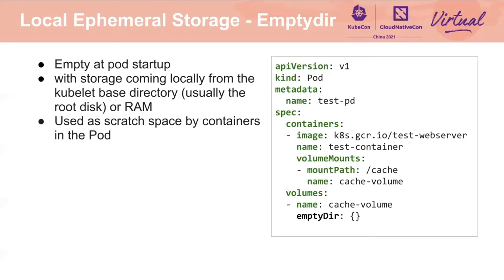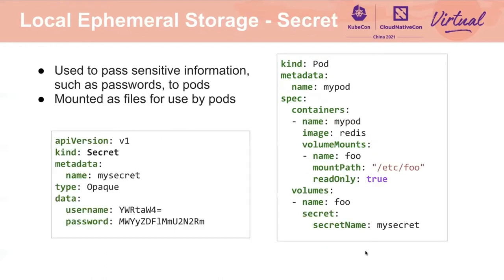An empty dir volume can be used as a scratch space. A secret volume is used to pass sensitive information such as passwords to pods. You can store secrets in the Kubernetes API and mount them as files for use by pods. Secret volumes are backed by tmpfs, so they are never written to non-volatile storage.